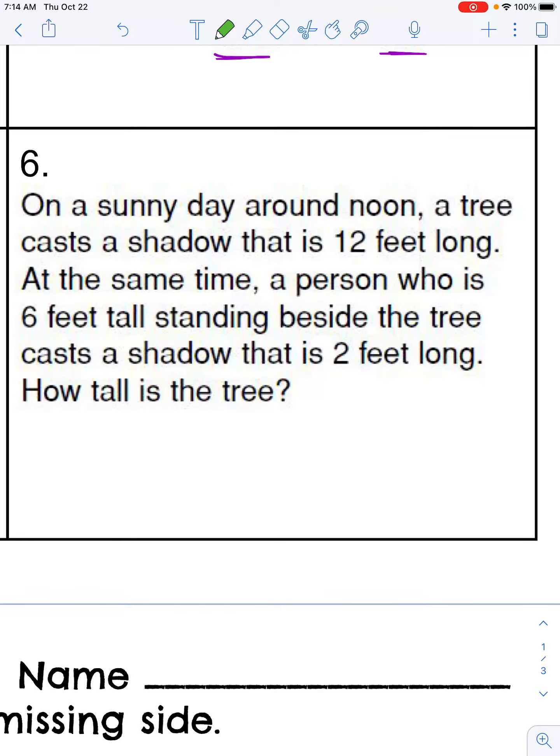This is number six on your indirect measurement classwork. It says, on a sunny day around noon, a tree casts a shadow that is 12 feet long. At the same time, a person who is six feet tall standing beside the tree casts a shadow that is two feet long. How tall is the tree?